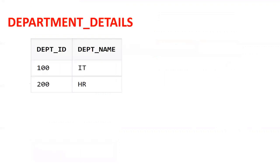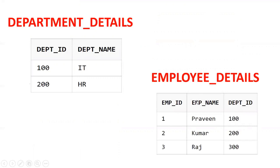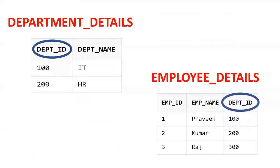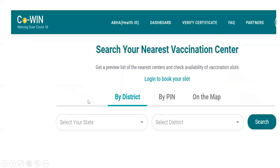Let's look at an example with department details. The department table has two columns: department_id and department_name, with records like 100 for IT and 200 for HR. In the employee table, if an employee has department_id 300 but there is no department 300, that is invalid data. To overcome this, we use PRIMARY KEY and FOREIGN KEY to enforce referential integrity between parent and child tables, so only valid data gets entered.